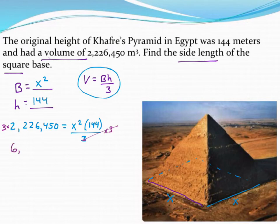Tripling that volume gets me 6,679,350. And then on the other side, that 3 is canceled out. I'm just going to rewrite it as 144 x squared.